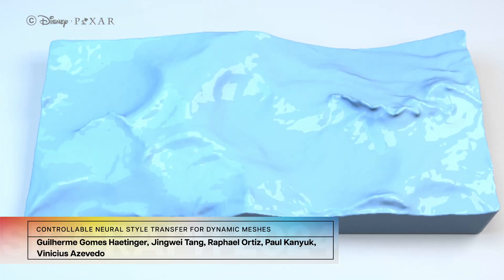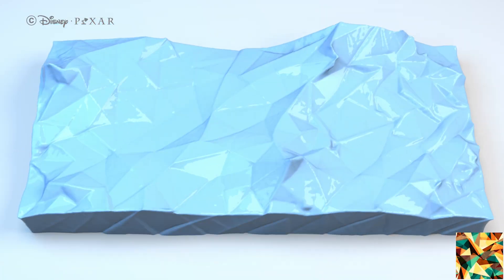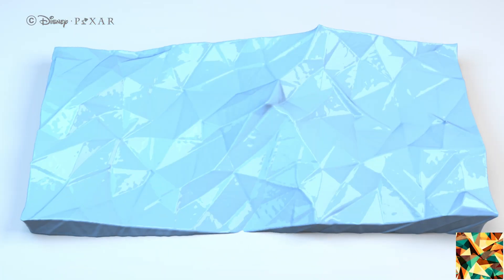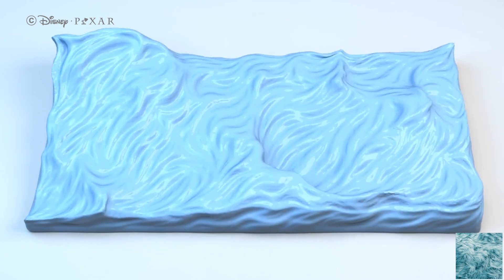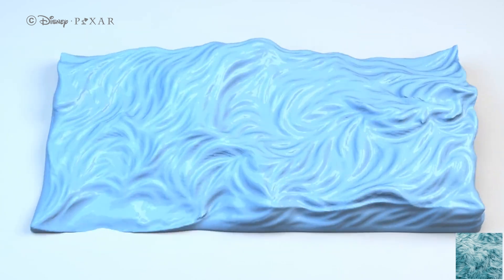Feeling flat? Use neural style transfer to copy style from 2D images to 3D meshes, even dynamic simulations.